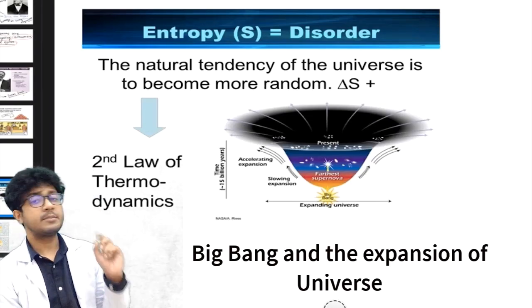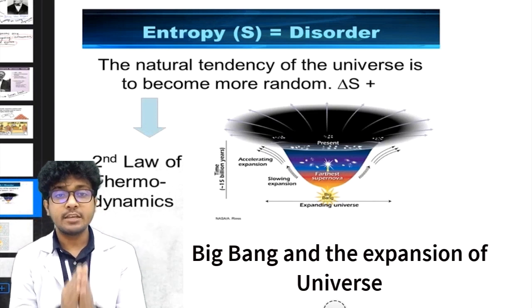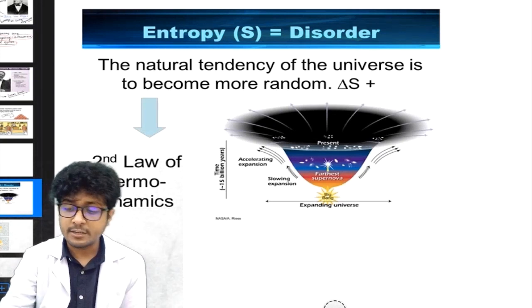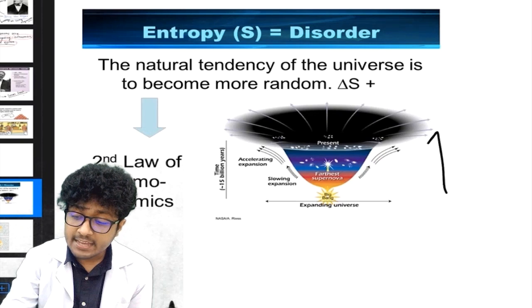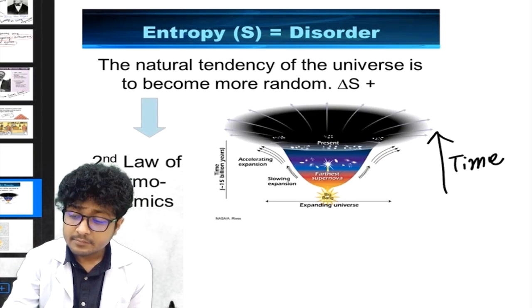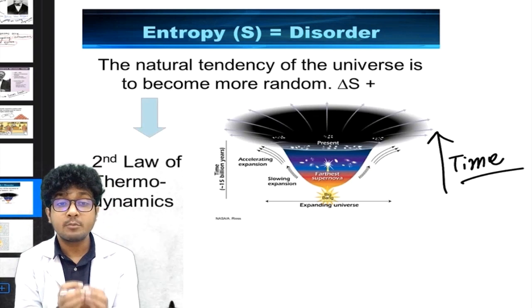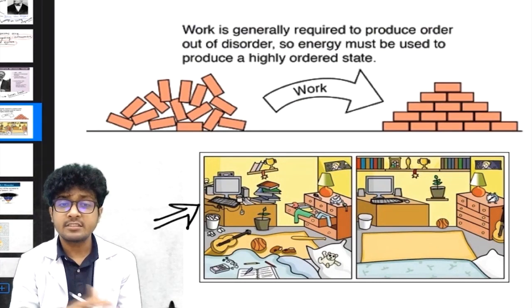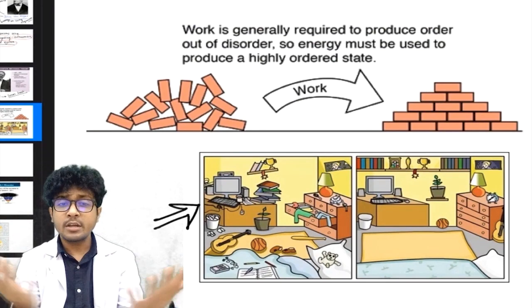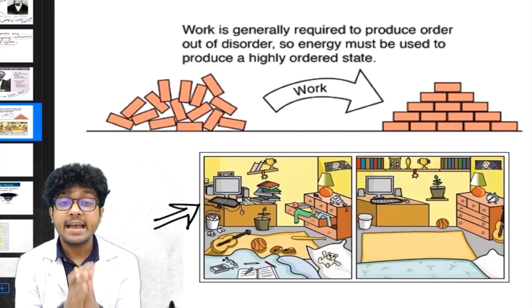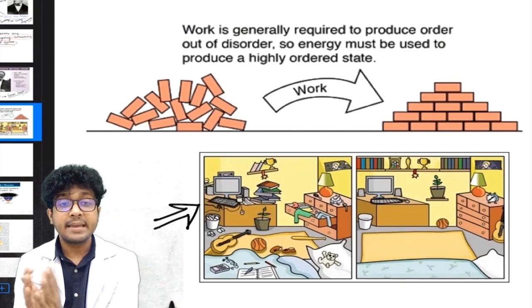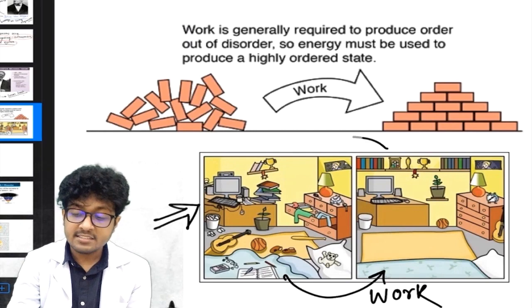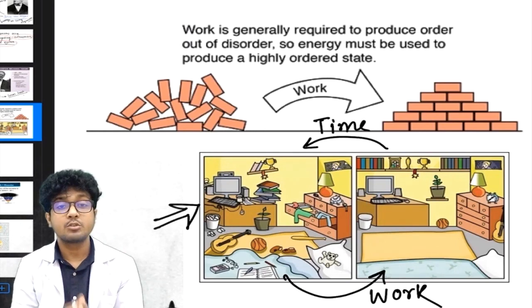The second law of thermodynamics states that the natural tendency of the universe is to become more and more disordered and random, and this also determines the arrow of time. As time passes, any substance gets more and more disordered. For example, in your drawing room, as you leave things here and there, the room becomes more disordered over time — someone has to do work to restore order.